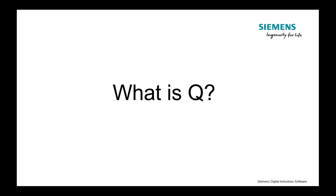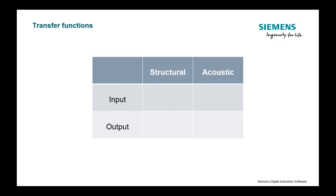What is this quantity called Q? We're measuring a transfer function. With a structural system — this is the first transfer function I measured — you're putting input into the structure, and that's usually a measured force. Your output is typically measured with an accelerometer, so your output is an acceleration. This is where we get our A over F, or acceleration over force. We create a bunch of these when we're doing a modal analysis — acceleration over force transfer functions.